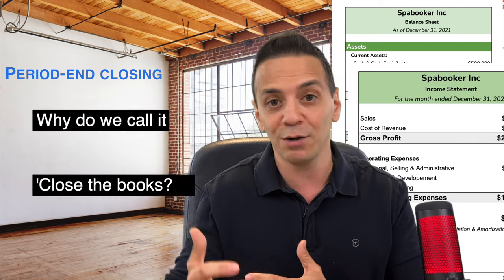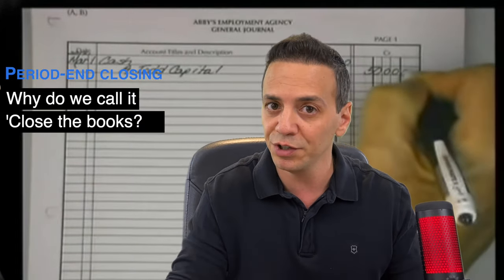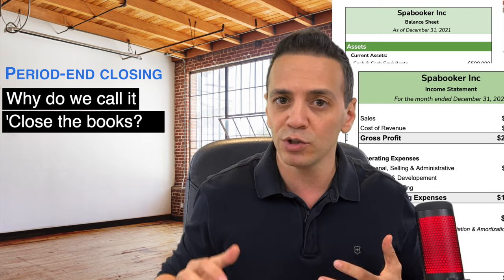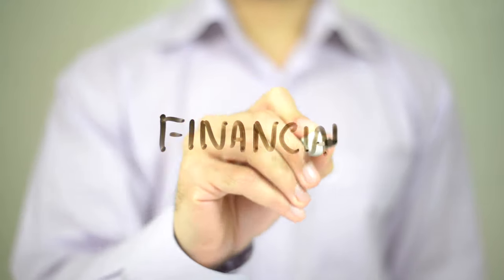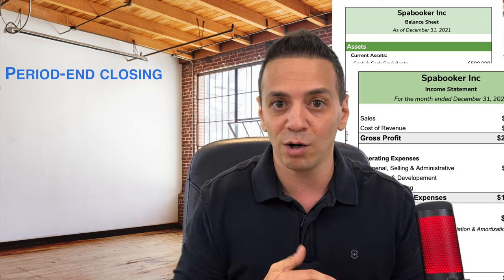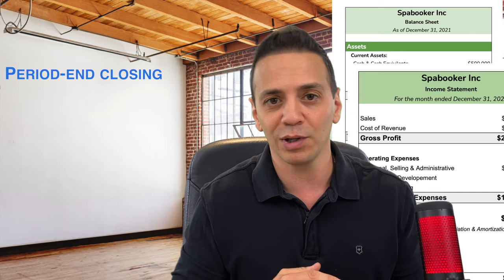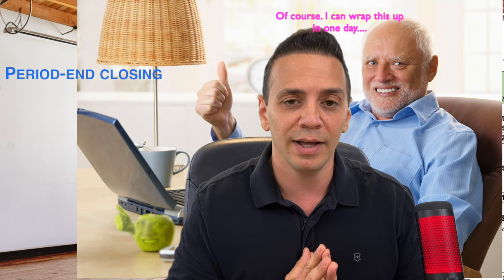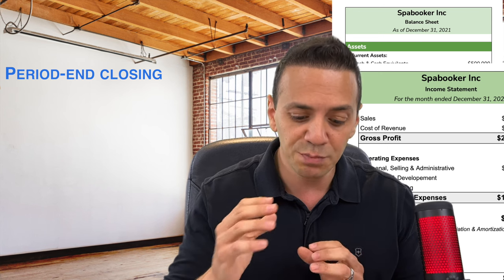If you go back in time when accounting was done on physical paper and columnar pages, closing the books literally meant you entered all your expenses and revenue and physically closed the book. But today, when we say close the books, it means your books and records are complete in the accounting software and you're ready to generate financial statements. It's all about completeness and accuracy. That is closing the books.